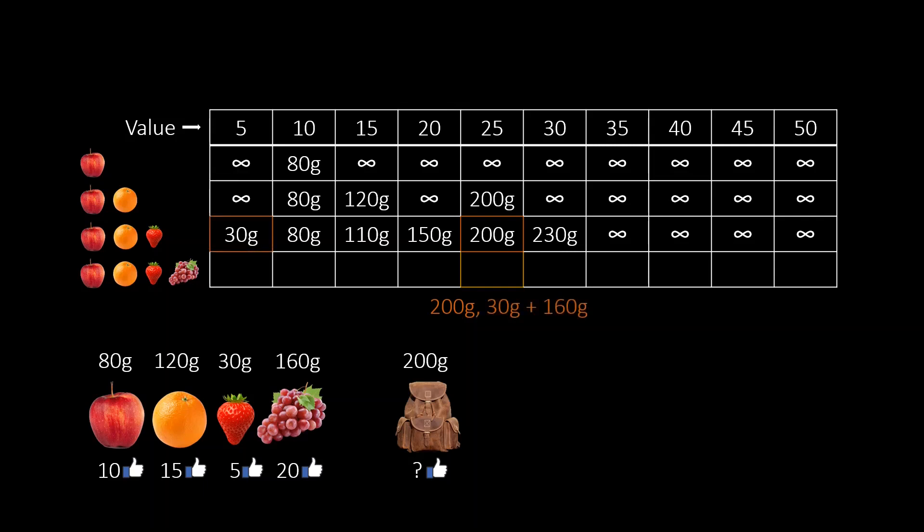This would already give us a value of 20. So only 5 is missing to reach 25. Hence, we need a subset with value 5 consisting of the first three fruits. Checking the table shows that the lightest such subset weighs 30 grams. Adding the weight of the grapes gives us 190 grams. Since we can choose the better of the two options, the result is the smaller of the two values.